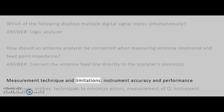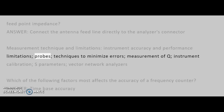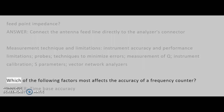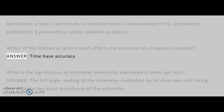Additional measurement topics include: measurement technique and limitations, instrument accuracy and performance limitations, probes, techniques to minimize errors, measurement of Q, instrument calibration, S-parameters, and vector network analyzers. Which of the following factors most affects the accuracy of a frequency counter? Answer: Time-base accuracy.